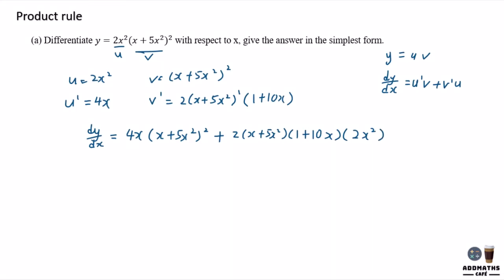So in this case, we need to simplify the answer. What I do is to make this plus sign as a wall, compare these two sides and take a similar equation. I can see (x plus 5x squared) to the power of 2 and (x plus 5x squared) to the power of 1. Always take the equation with the lowest power, which is power of 1. So cut this off, cut this off. And I will have x and x here, so take the lowest power, which is x to the power of 1. Take this down, take this down.